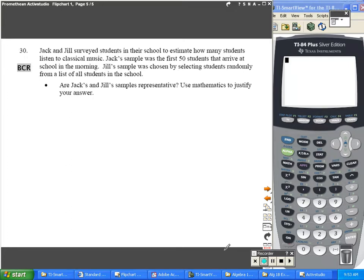Okay, number 30. Jack and Jill surveyed students in their school to estimate how many students listened to classical music. Jack's sample was the first 50 students that arrived at school in the morning. Jill's sample was chosen by selecting students randomly from a list of all students in the school.